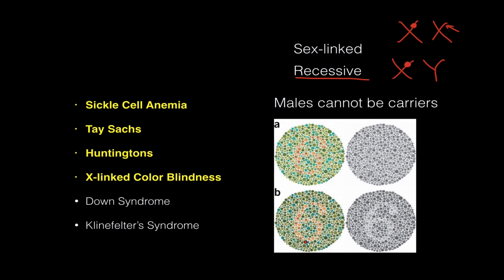Here's a colorblind test — this is kind of easily detectable in the human population, depending on which numbers you can read and can't read. I can't see anything in two of them, but I can see a six in one and a six in another. So I know for a fact that I am red-green colorblind — I do have this trait.